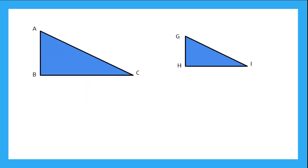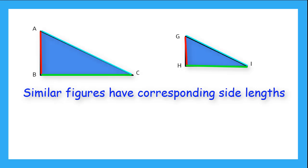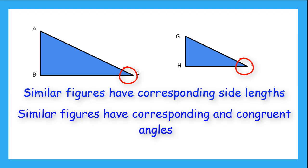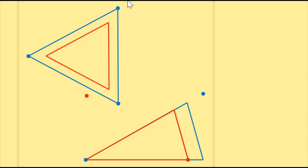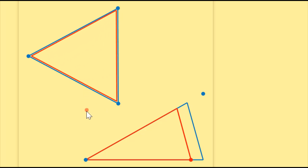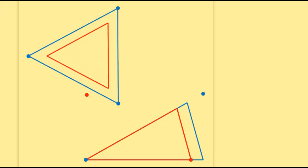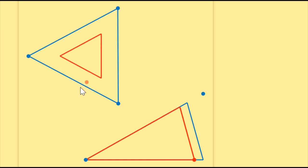Now, if we go back to similar figures, we know they are not the same size, but they are the same shape. So there has to be something corresponding about them. Even though the side lengths aren't congruent — they are different lengths — we can see which sides on one triangle correlate to the other. And it might be hard to see at first, but similar figures have matching angles as well. Here I have a red triangle inside of a blue triangle. Notice that the angles of the red triangle and the blue triangle are always matching, and the side lengths are always corresponding, even as the size of the red triangle changes.